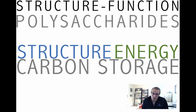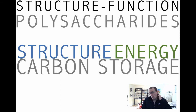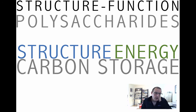Cellulose is a structural molecule, found in plant cell walls. We've got energy storage — simple sugars. We've got glycogen, which is your longer-term store of energy before we get into fats. And then we've got carbon storage. So here are three functions.